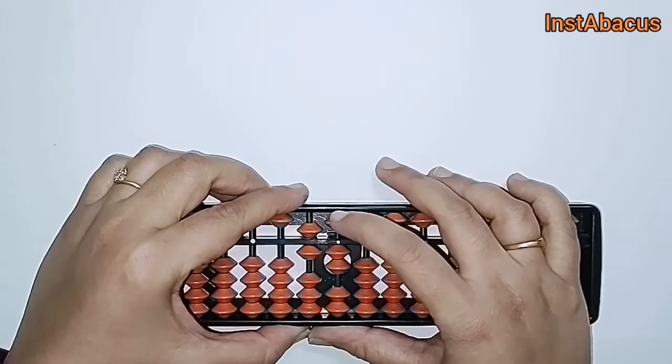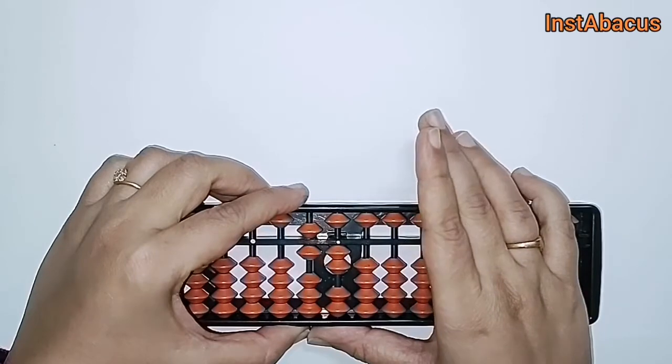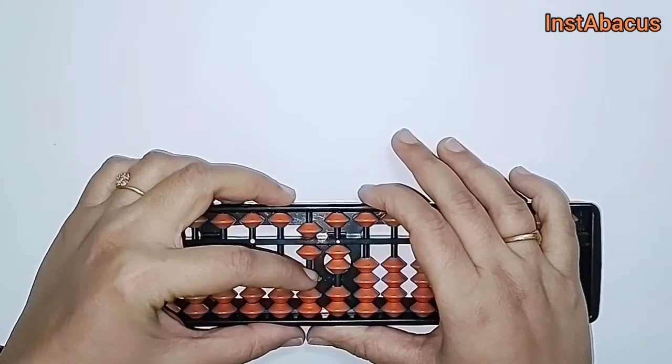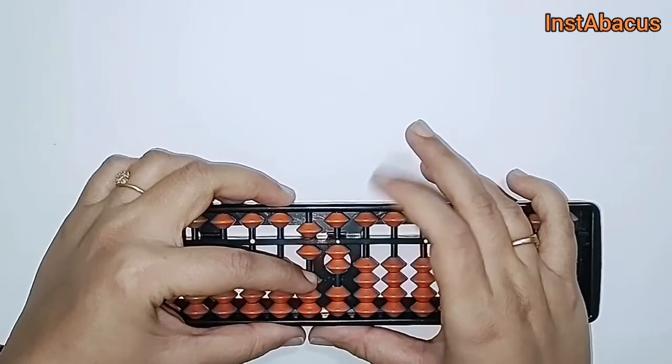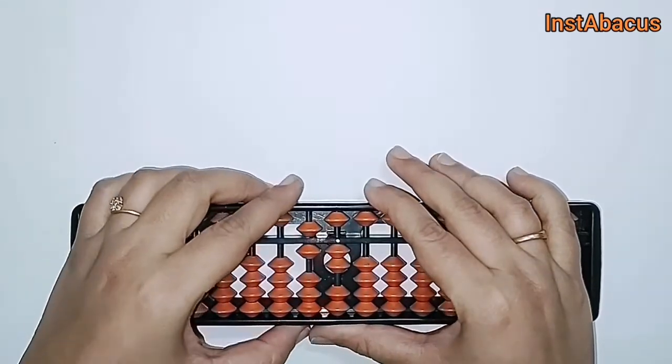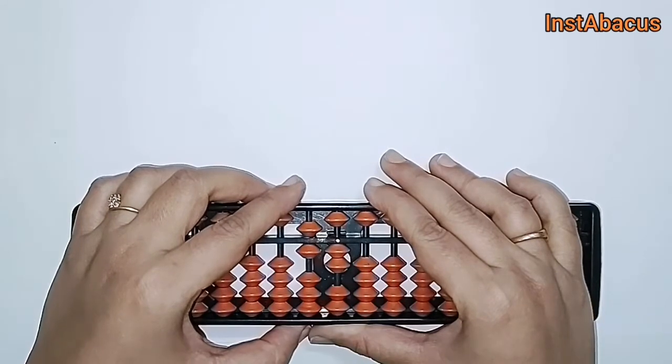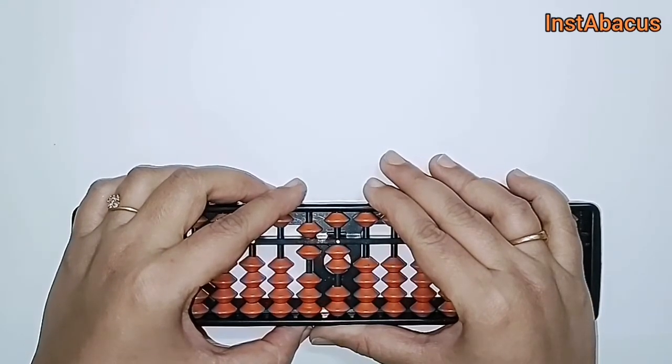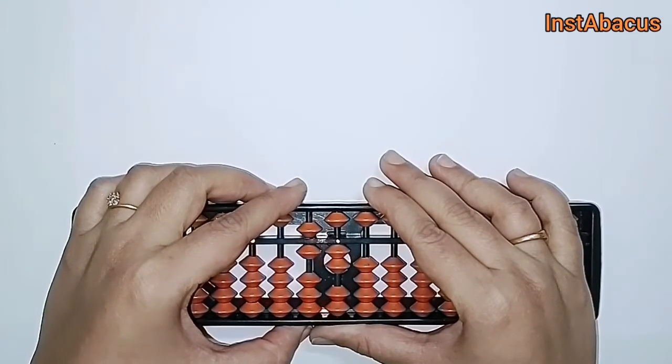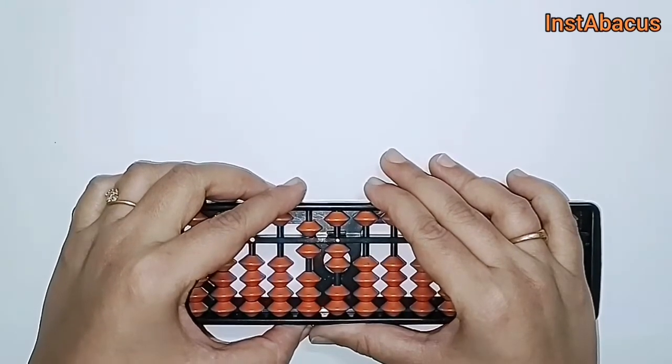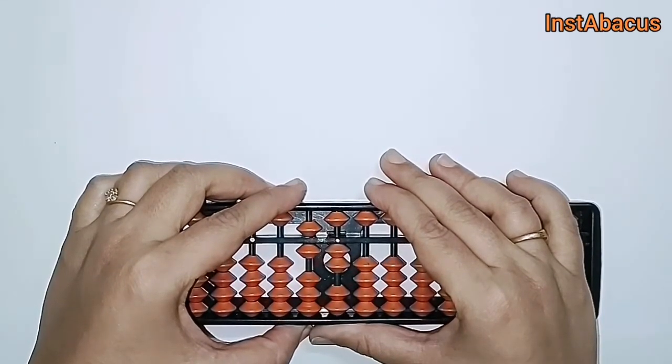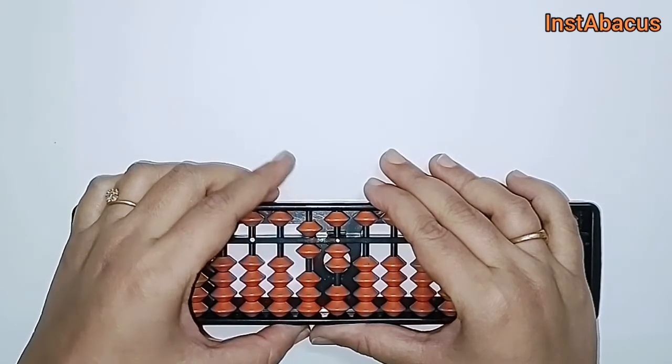Why? Because the value of this heavenly bead here is 5, and this earthly bead here, being in the tens rod, is 10. If you haven't seen my previous videos, please go and watch everything in detail so that you will not miss out on anything. So what is our answer? Yes, 62. That's correct.